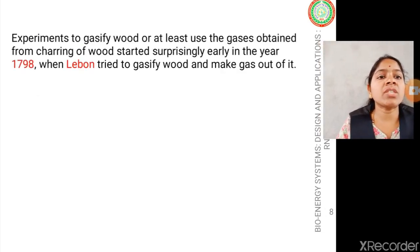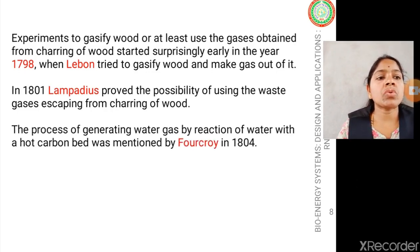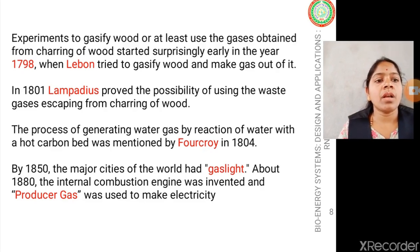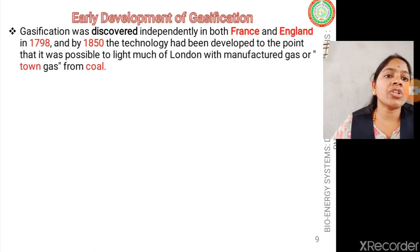Experiments to gasify or use gases obtained from the charring of wood started surprisingly early. Later, there were further progressions in the development of the gasification process. In the 1800s, charring of wood was used to develop producer gas. By 1815, the major cities of the world had gas lights generated from the gasification process. Around 1880, the same producer gas was used for internal combustion engines, and in the 19th century they used it to make electricity.